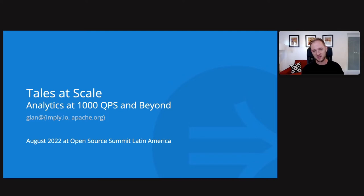Hi, everyone. Thanks for coming to Open Source Summit and specifically for coming to this talk, Analytics at 1000 QPS and beyond. I'm Gian Rolino and I'll be talking about how we do this with Apache Druid.